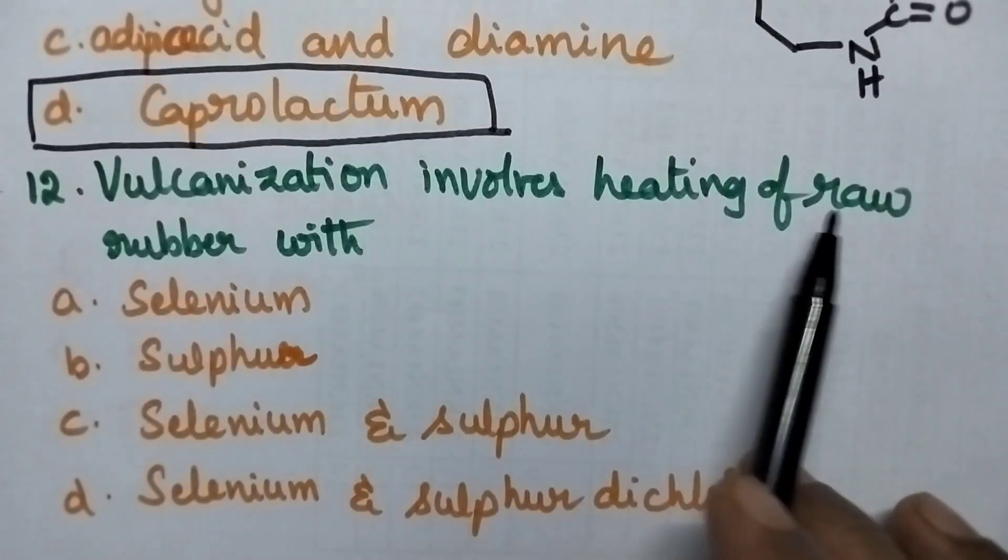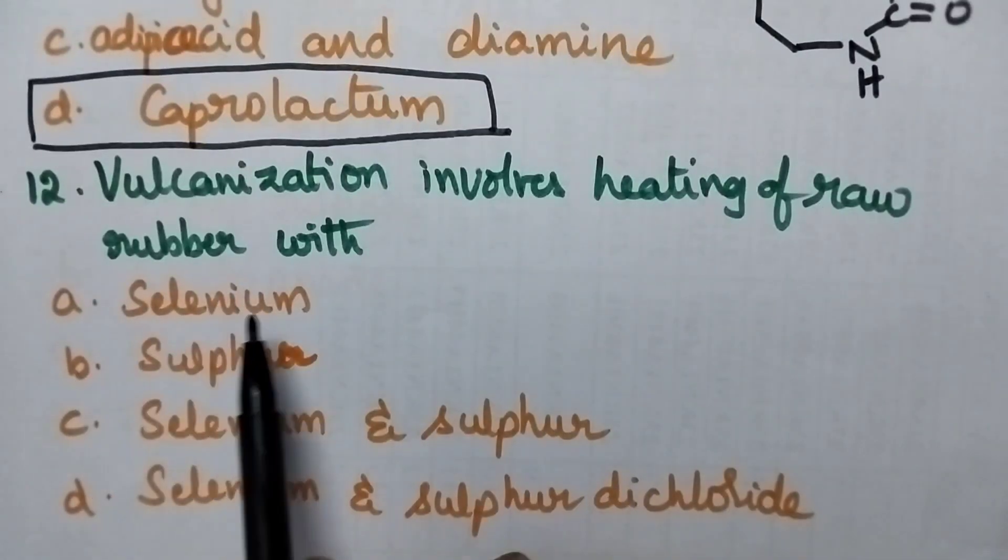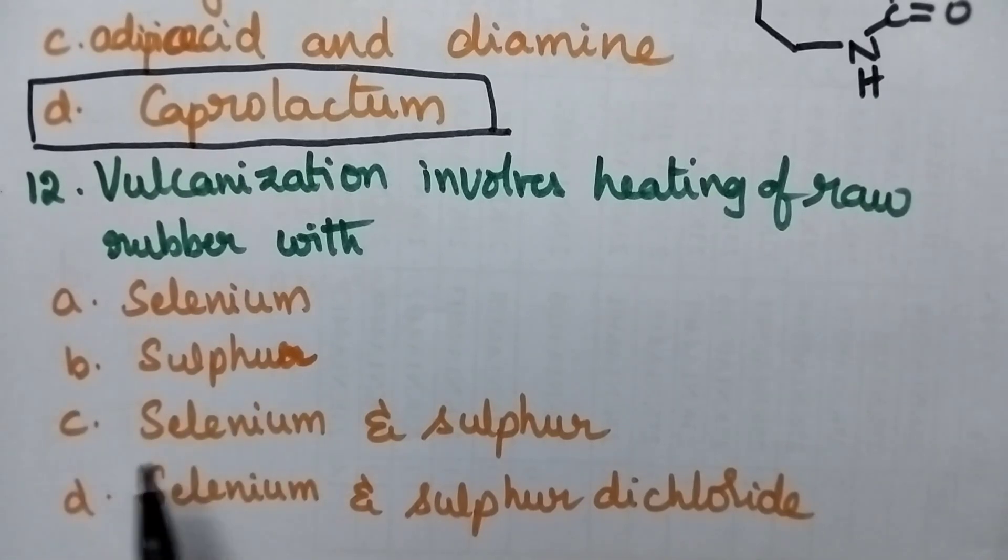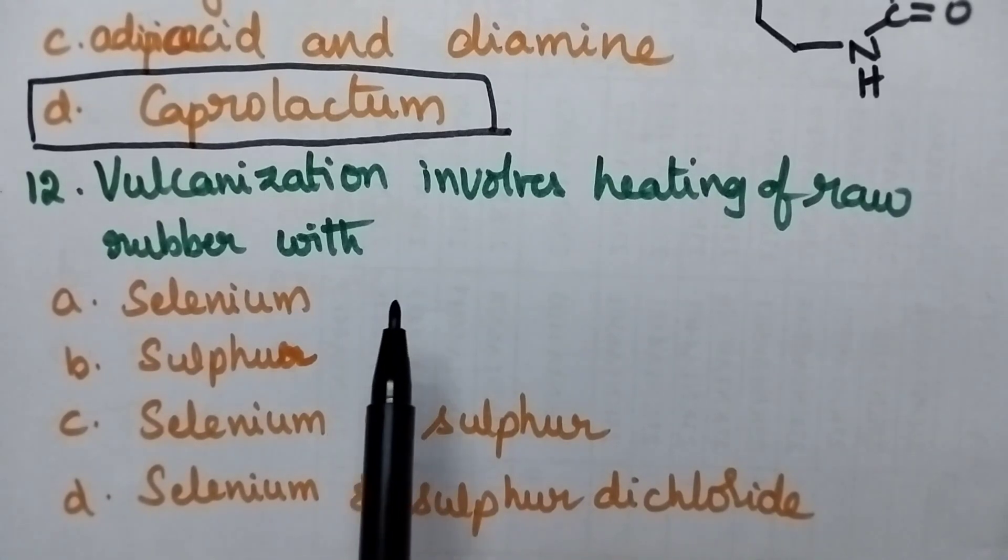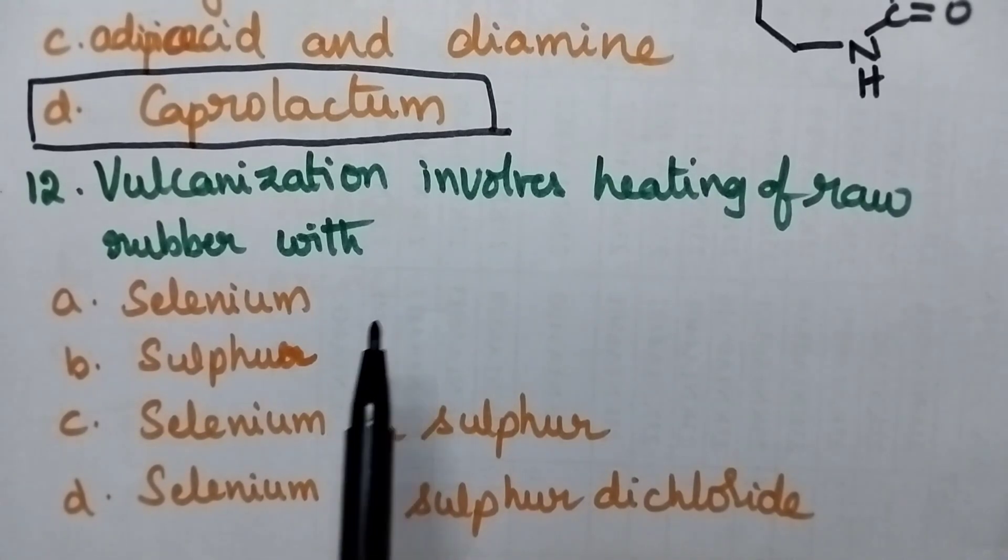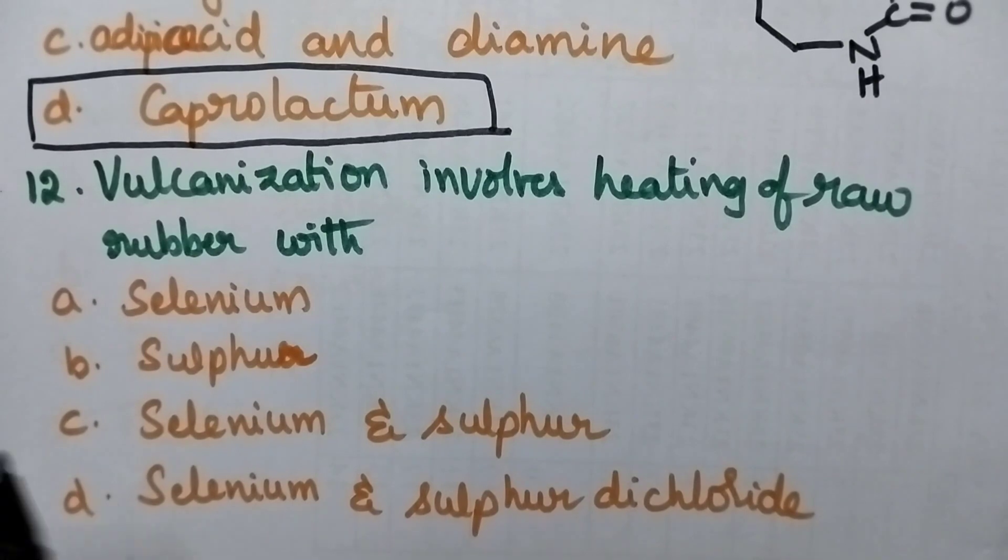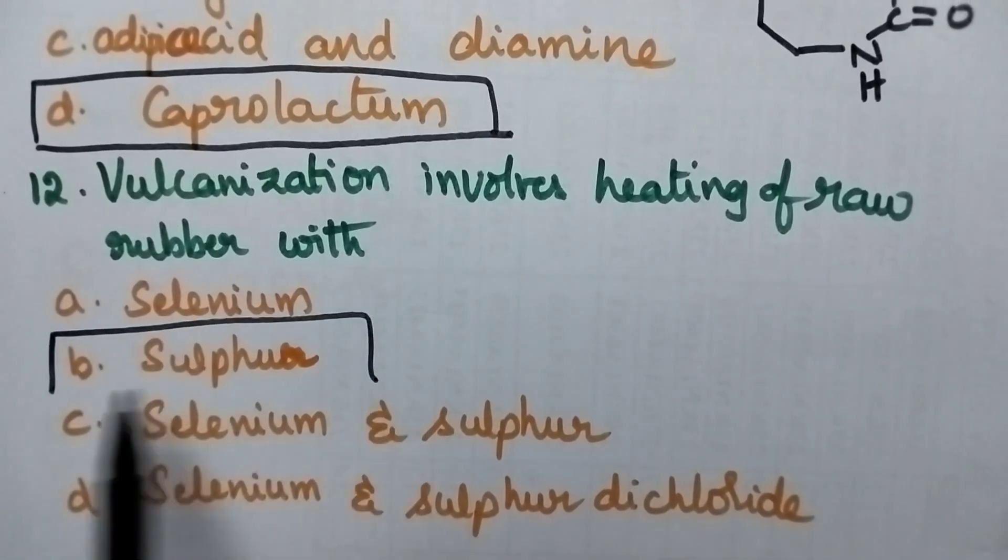Vulcanization involves heating of raw rubber with A. Selenium, B. Sulphur, C. Selenium and Sulphur, D. Selenium and Sulphur dichloride. Vulcanization generally involves the heating of raw rubber in the presence of Sulphur. So option B is the right answer.